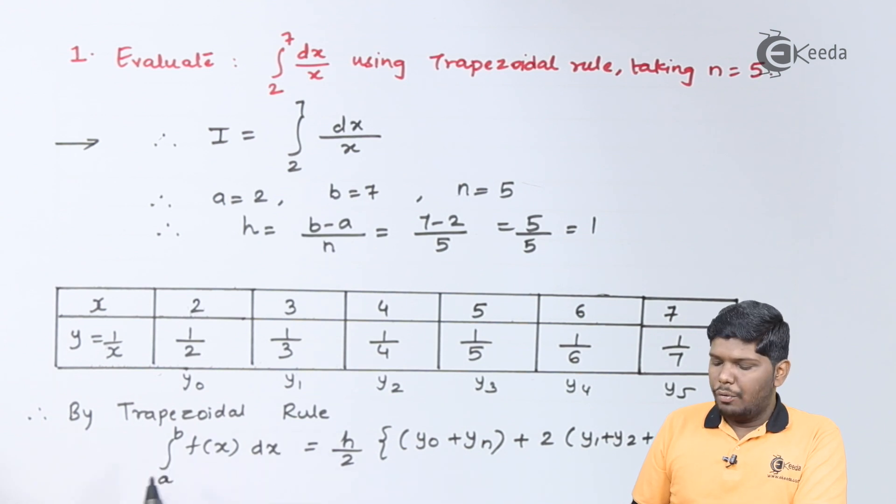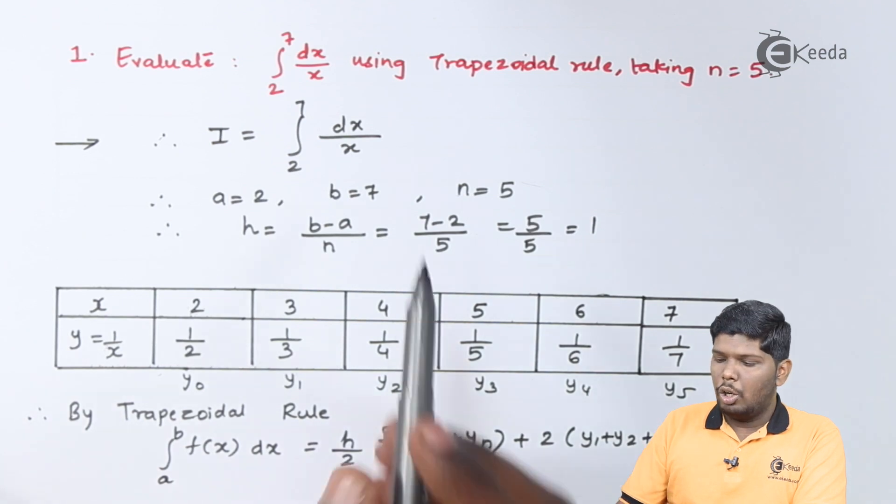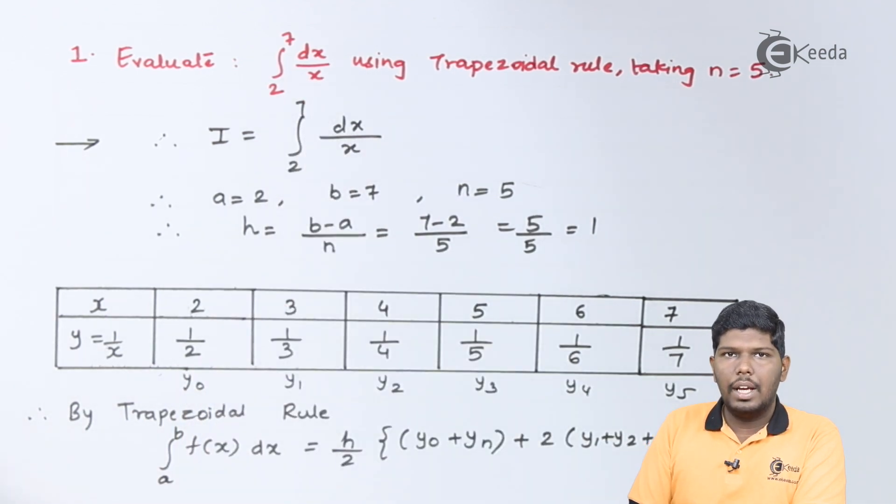The trapezoidal rule is given by the formula: integral a to b f of x dx equals h by 2 times y0 plus yn, that is first term plus last term, plus twice the addition of remaining terms, that is y1 plus y2 plus y3 plus y4. So let us use this formula in order to get integral of 2 to 7 of 1 by x dx.